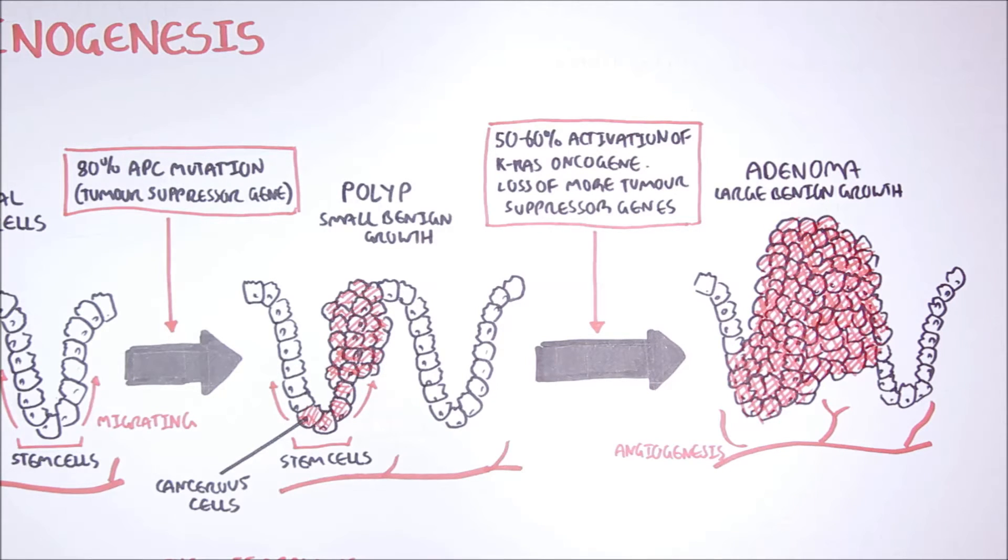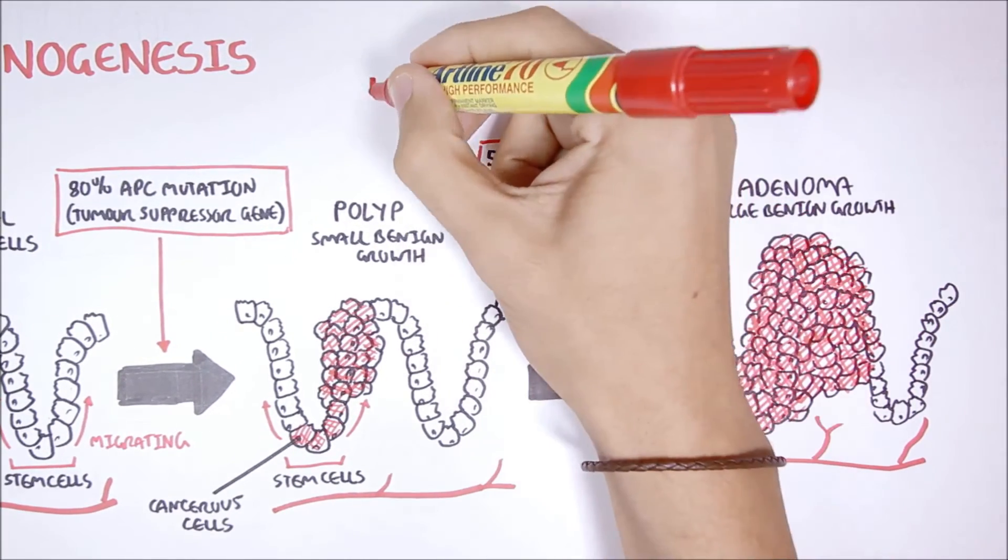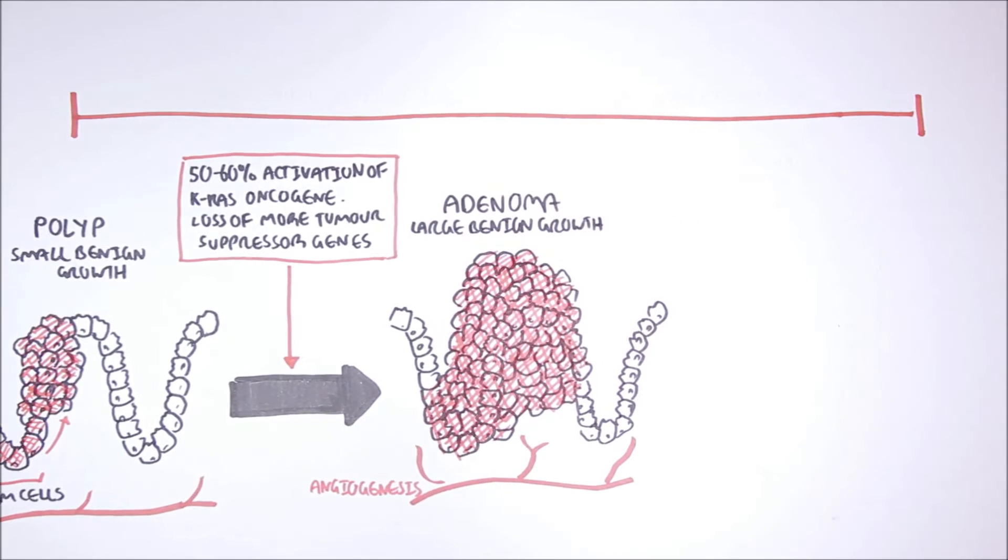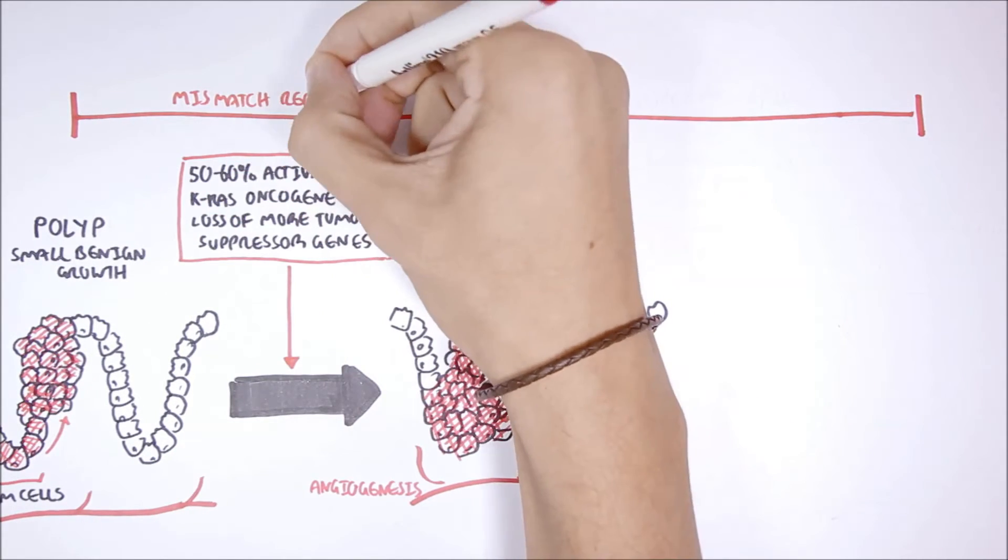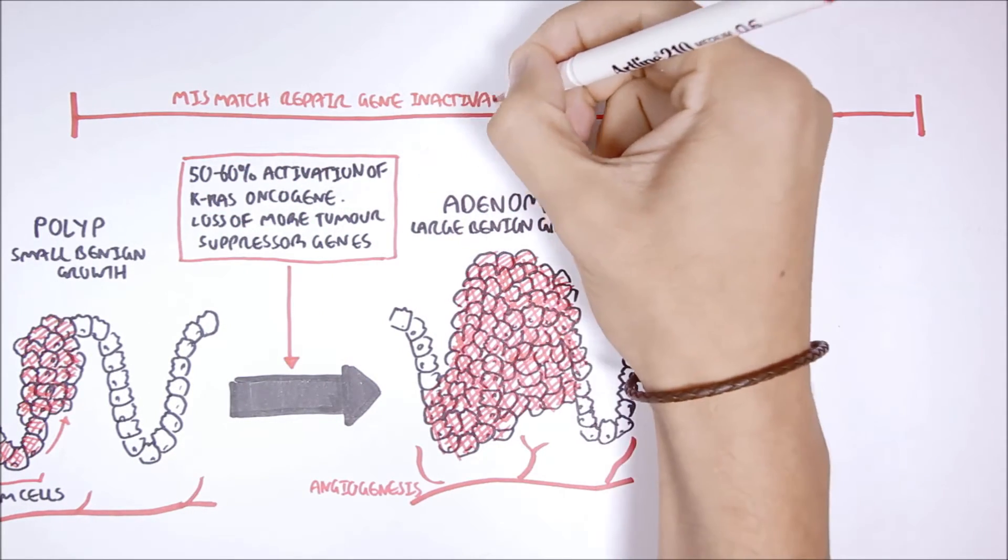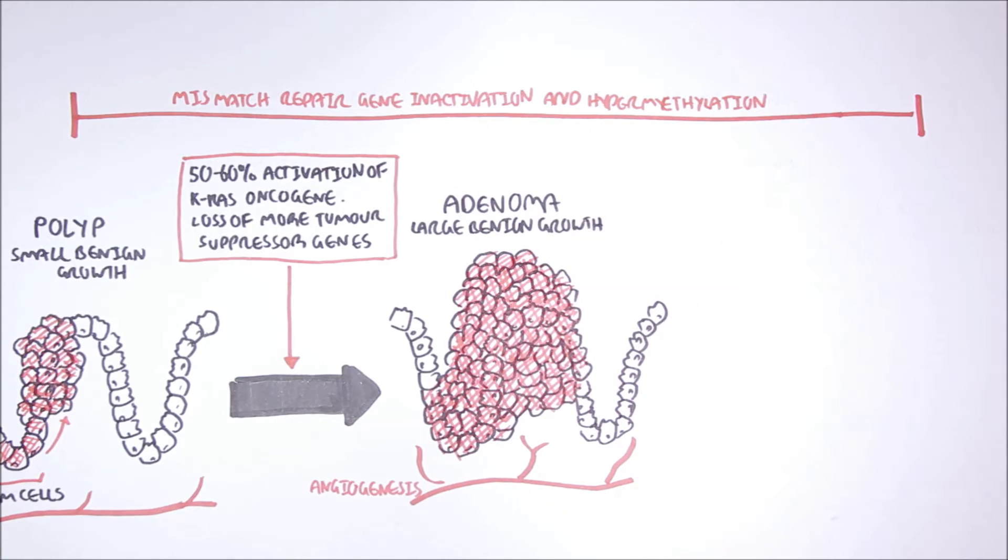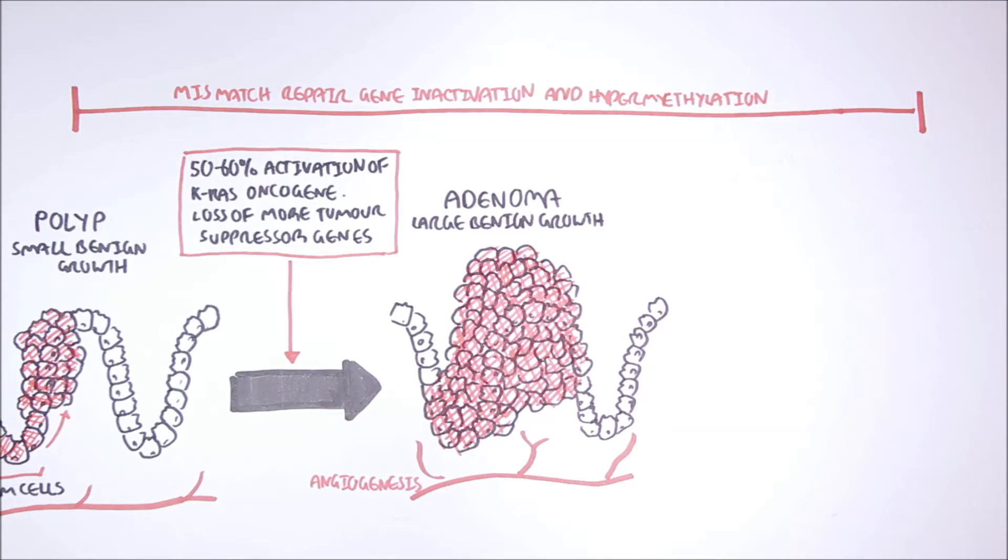It should be noted that from when the potential cancerous cell, the abnormal cells, develop, there can be a mismatched repair gene inactivation, as well as hypermethylation, occurring on the DNA. The mismatched repair gene normally repairs mutations that occur on the genes, in the genes.